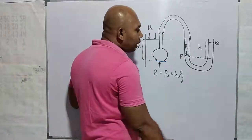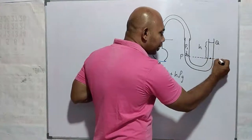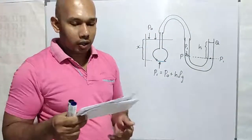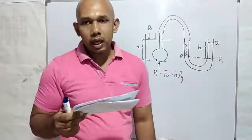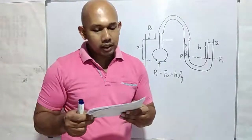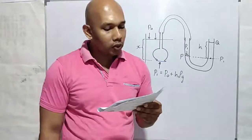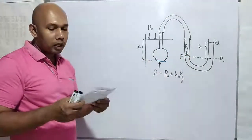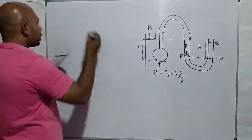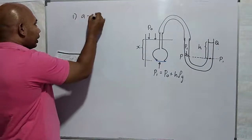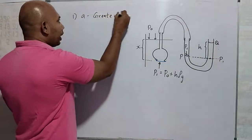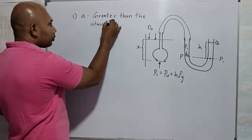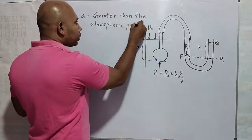At the same level of the same liquid, liquid pressure is constant, so the pressure here is also equal to P1. The question asks: is the pressure inside the thistle funnel less than, equal to, or greater than the atmospheric pressure? Since P1 equals atmospheric pressure plus HρG, pressure P1 is greater than the atmospheric pressure. So the answer for part one is: greater than the atmospheric pressure.